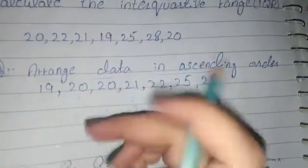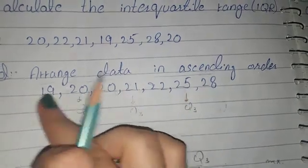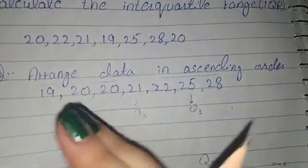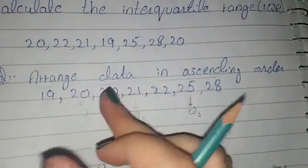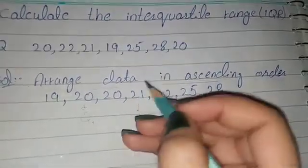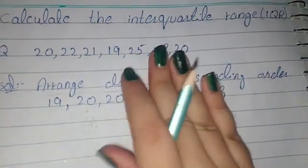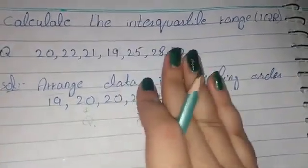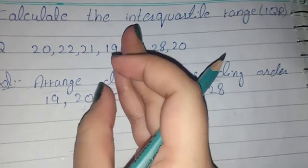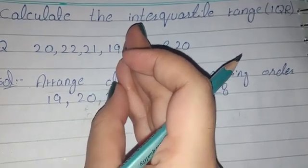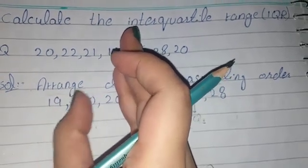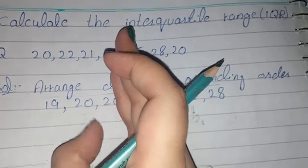Since 21 is Q2, we now need to find Q1. We look only at the three values on the left side. We draw a line and find the middle value of those three, which is 20. So 20 is Q1.